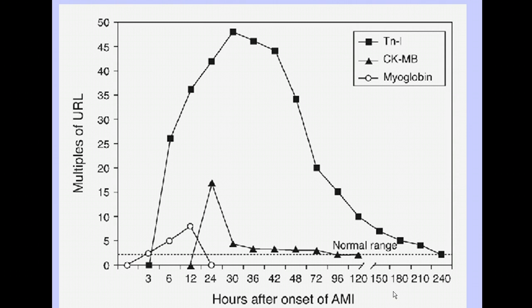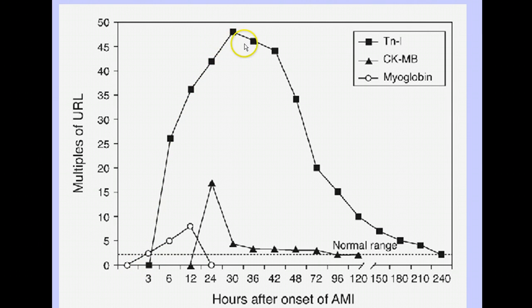Cardiac troponins are elevated within four hours and stay elevated for seven to ten days — very sensitive, very specific. Looking at the pictorial, myoglobin rises very quickly but doesn't get as high and drops within 24 hours. Troponin goes up extremely high after three to four hours and stays elevated for seven to ten days. CKMB starts to rise within 12 hours and stays elevated for a couple of days. In most cases we do CKMB and troponin together in the laboratory — those are the two most common tests for heart attack.